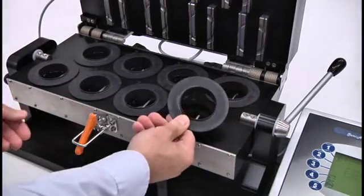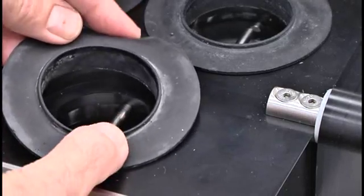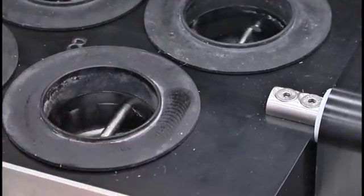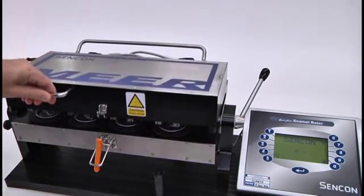Changing to a different end size is simply a matter of replacing the pocket seal. This also makes maintenance easy if a seal becomes worn or damaged.